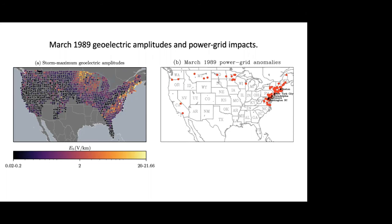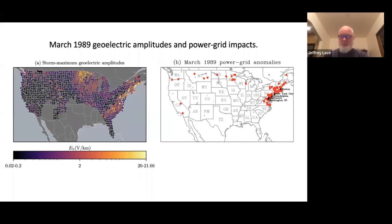Nick asks: can the current produced by a magnetic storm ruin consumer electronics like computers? Probably not. Those are very small objects. When I talk about the electric power grid, I'm talking about something that traverses long distances — the effect scales with the length of the conductor.